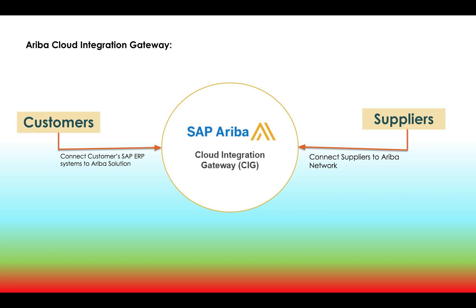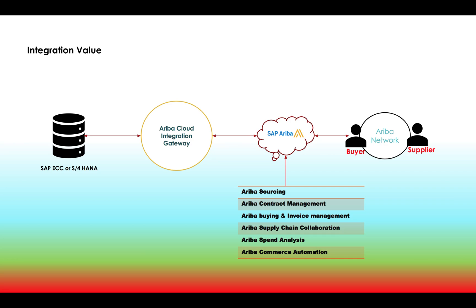This diagram explains customers who are using SAP Ariba Network. Customers can use SAP Ariba Network or SAP Ariba solutions to connect their SAP ERP systems to Ariba Network or Ariba solutions. Similarly, suppliers can also connect to Ariba Network via Cloud Integration Gateway. These are the main partners for SAP Ariba. Customers can connect their SAP ECC or SAP S/4HANA system to SAP Ariba via Ariba Cloud Integration Gateway, and suppliers also use Ariba Cloud Integration Gateway to connect to SAP Ariba Network.